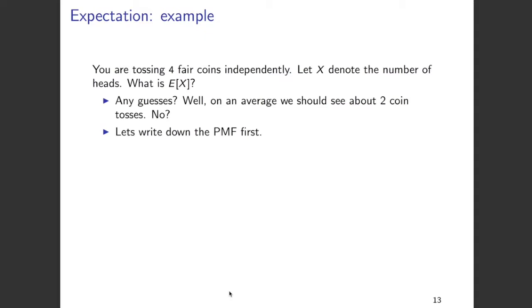Let's look at the probability mass function of capital X. Capital X, the number of heads in these four coin tosses, can take values 0, 1, 2, 3, and 4. That is, you can have zero heads, one head, two heads, three heads, or four heads. These are the only five values that capital X can take.